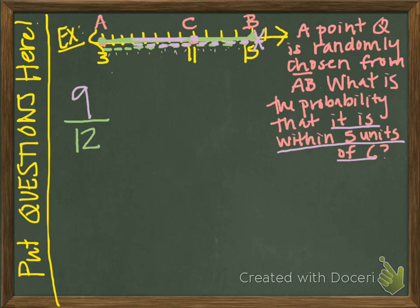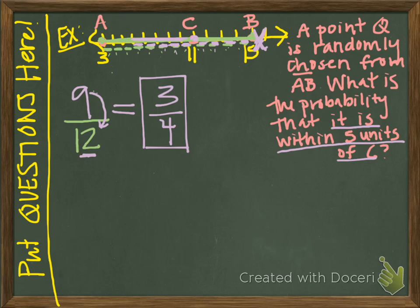So 9 is how many outcomes we want to happen, and 12 is the total number of things that could happen. That tenth spot had to be excluded because it falls outside these 12 units. Reducing 9 twelfths, we get 3 fourths. So the probability of choosing a point on segment AB that is within 5 units of C is 3 out of 4.